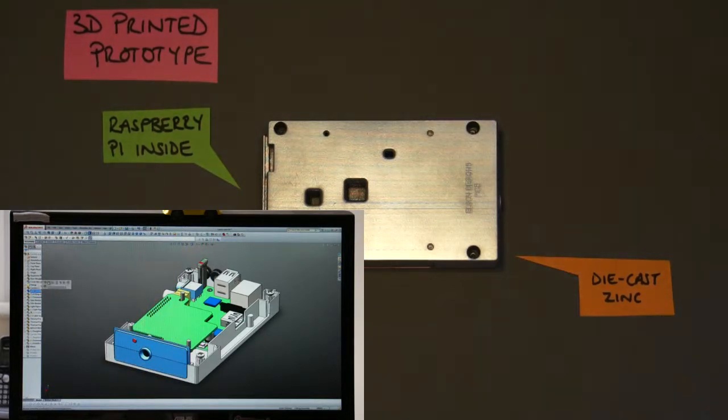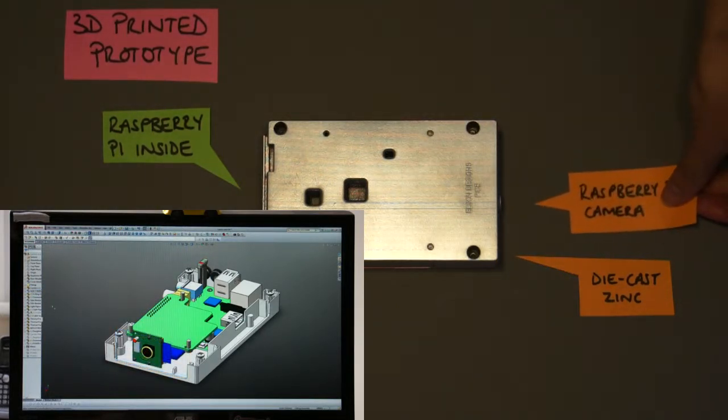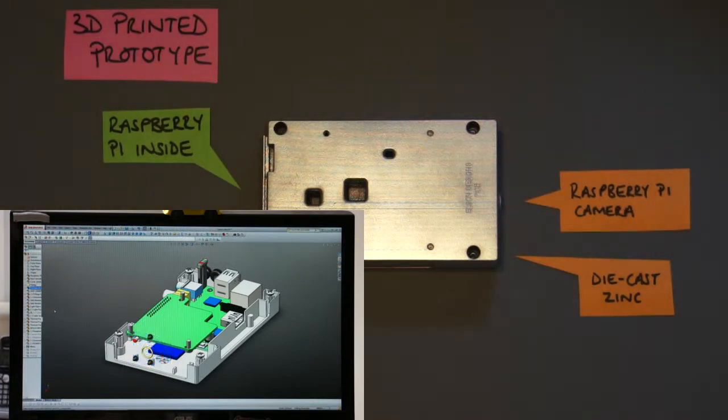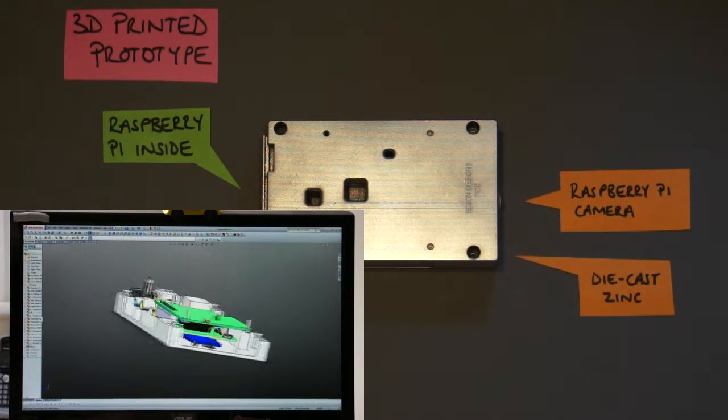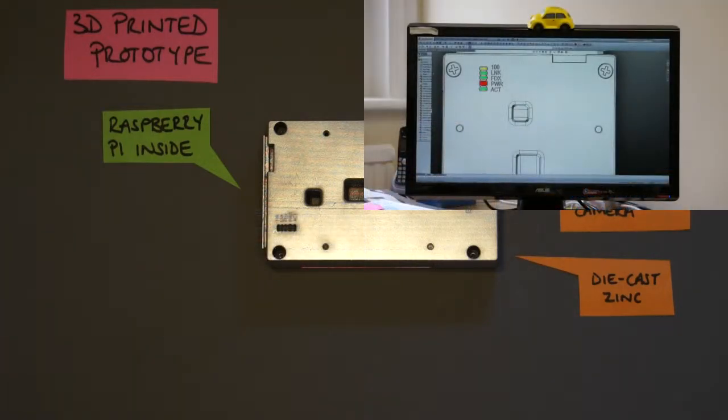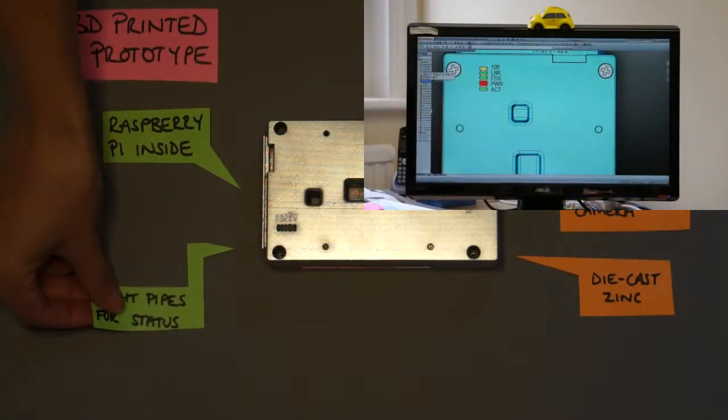The Raspberry Pi's 5 megapixel camera is mounted on the front panel with the status LED visible. The PiS also uses light pipes to show the Raspberry Pi status LEDs.